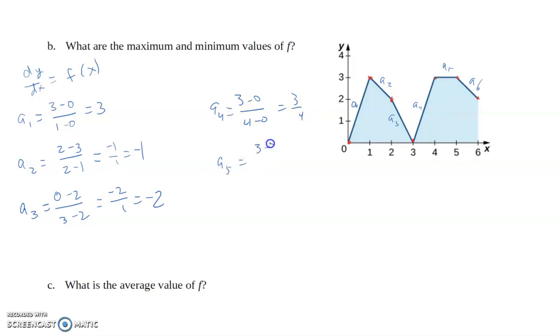A5 is 3 minus 3 over 5 minus 4, which is 0. And now looking at all the different values, again, the function is piecewise constant. So these are all the values that it can take on. That means that this is the maximum value, and this is the minimum value.